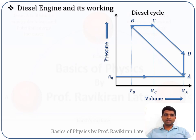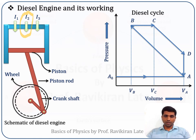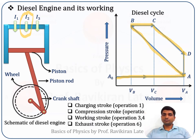The diesel engine has a similar arrangement to the Otto engine, with one key difference: the diesel engine does not use a spark plug. The diesel cycle also consists of six operations: A-naught to A, A to B, B to C, C to D, D to A, and A back to A-naught.